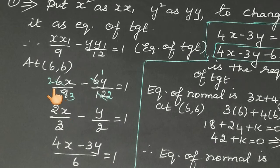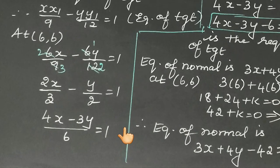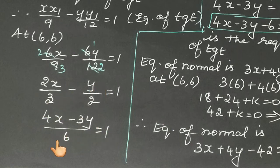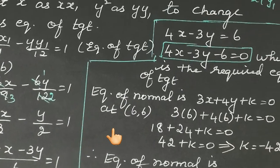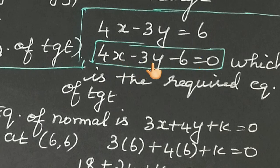Simplifying 6x/9 minus 6y/12 equals 1: cancel to get 2x/3 minus y/2 equals 1. Taking LCM of 3 and 2 which is 6, we get 4x minus 3y equals 6. Therefore, 4x minus 3y minus 6 equals 0, which is the required equation of the tangent.